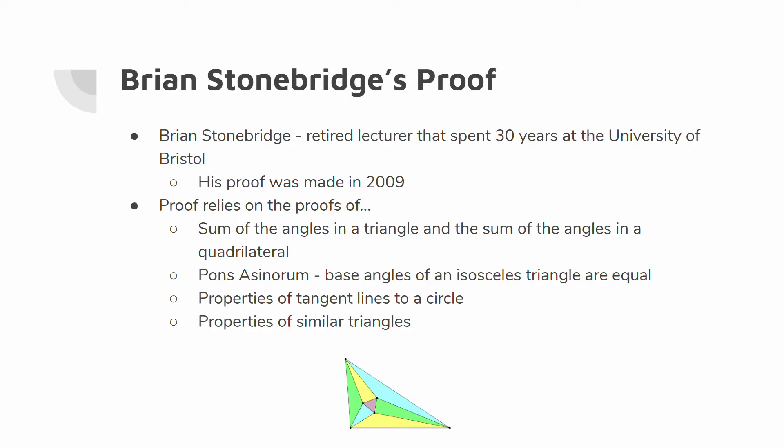Brian Stonebridge is a retired lecturer that spent 30 years at the University of Bristol. His proof was developed in 2009, which is pretty recent. His proof relies on several different factors we will need to show before we go into Morley's theorem proof. These include the sum of the angles in a triangle and in a quadrilateral, Pons Asinorum, several properties of tangent lines to a circle, and certain properties of similar triangles.